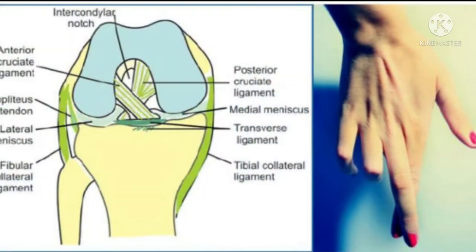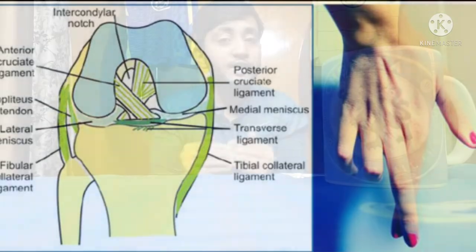Talking about the cruciate ligaments, they are present in the knee and they cross each other — the Anterior Cruciate Ligament in front and the Posterior Cruciate Ligament at the back. Their function is to provide stability to the knee joint. They prevent excessive rotation of the knee joint beyond a certain extent. The major function of the Anterior Cruciate Ligament is to prevent extra lateral rotation — that is, excessive outward rotation of the knee joint.